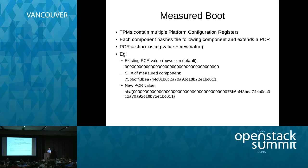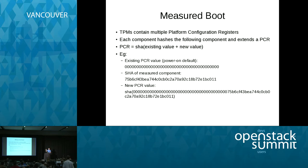One part of the base TPM spec is a set of Platform Configuration Registers, or PCRs. There are at least 16. When you boot the system, these PCRs provide a record of what has been booted. The first stage of boot hashes the next stage and writes that hash into a PCR. The algorithm takes the existing PCR contents, appends the new hash, and takes another hash of that. At power-on, the PCR is full of zeros; then you measure a component, append them together, hash that, and the result goes into the PCR.